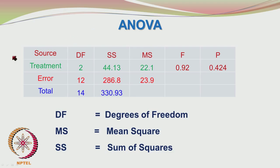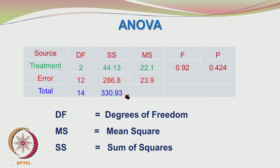I hope you had a nice break. Let us get on with the problem solving. We left the fertilizer problem where we were discussing the analysis of variance table. Source of variation: we have only 2 of them — treatment and error — and then the total. We have 2 and 12 degrees of freedom for treatment and error respectively. Sum of squares are 44.13 for treatment, 286.8 for error, and total is 330.93.